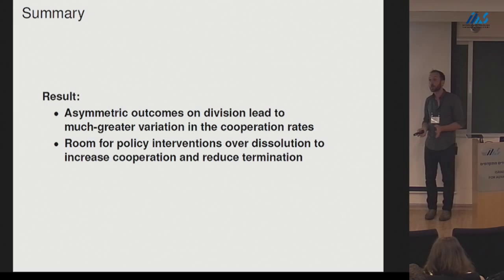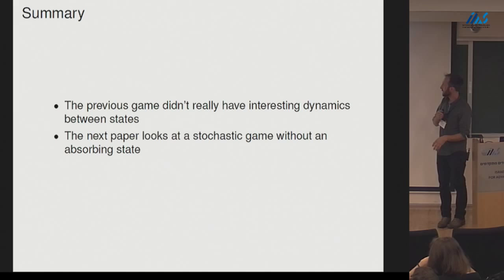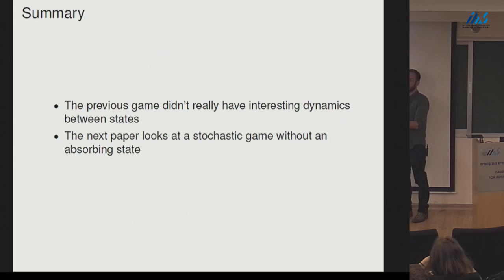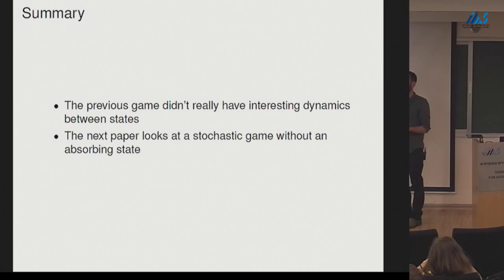Asymmetric outcomes on division lead to much greater variation in cooperation rates. I chose three institutions with asymmetric payoffs I could motivate from the real world and get very different behavior than with symmetric payoffs, suggesting room for policy interventions over how we write termination clauses in contracts. The fear of being identified as the bad player and receiving the low payoff appears to drive the higher cooperation rates in the judge treatment.